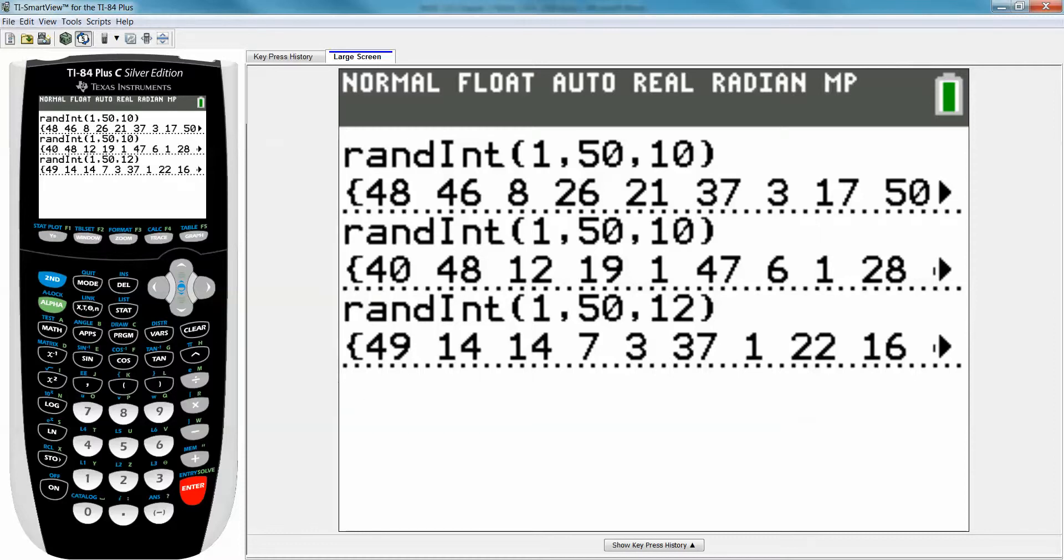Alright, so that's the new operating system. And you can see the old operating system if you're on that still, where you have to type the commas. 1, 50, 12. Anybody working off an 83, TI-83, that's what you'd have to do.